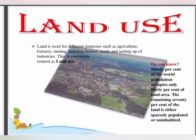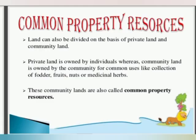Land can be divided on the basis of private land and community land. Private land is owned by individuals, whereas community land is owned by the community for common uses like collection of food, fruits, nuts, and medicinal herbs. Community lands are also known as common property resources.